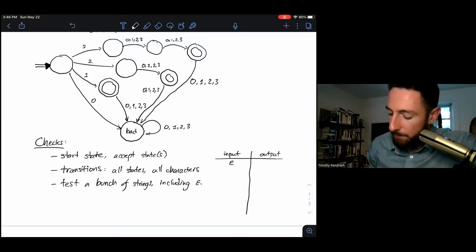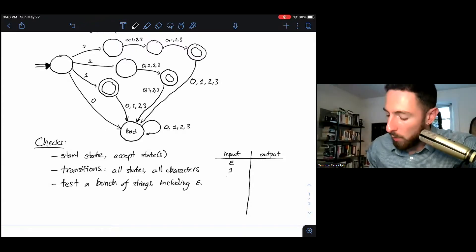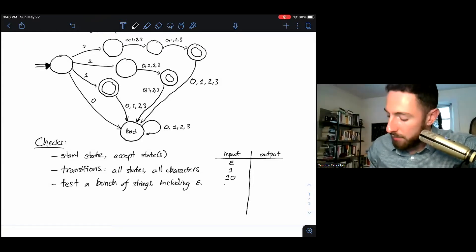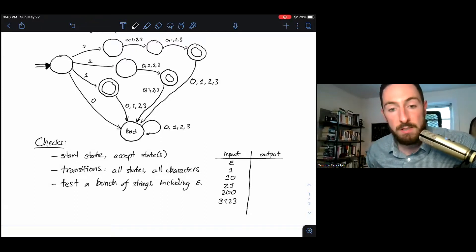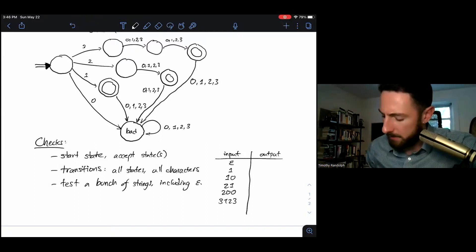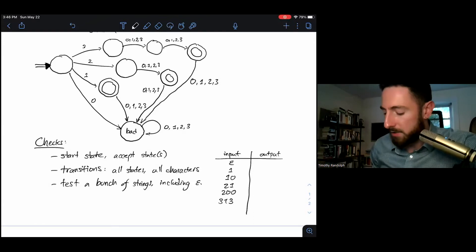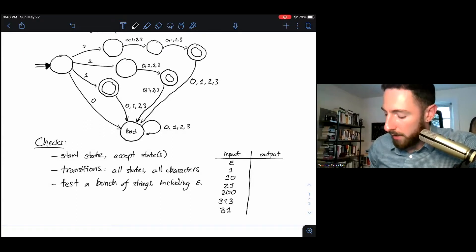There's no set list of inputs, but generally speaking, I want some examples that I know should succeed and some examples that I know should fail, maybe some long strings and some very short strings. In this particular case, let's test the empty string which should fail. The string one, which should succeed. It's got one character and begins with one. One-zero, which should fail. It's got two characters and begins with one. Two-one, which should succeed. Two-zero-zero, which should fail. It's too long. Three-one-two-three, which should fail. It's got four characters. How about three-one-three? That'll succeed. It starts with a three. It's got three characters. And finally, three-one, also too short.